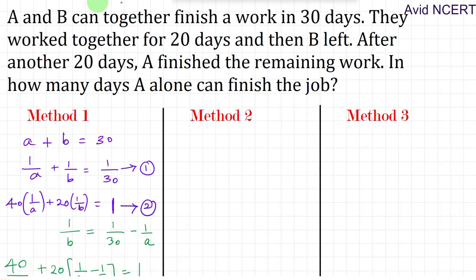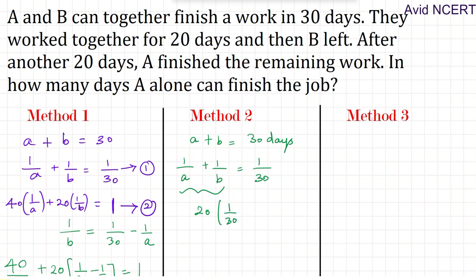The second method: A and B can together finish the work in 30 days, so their combined 1 day's work is 1/30. A and B together finish 20 days of work, which is 20 times (1/30). The zeros cancel, which equals 2/3. That means 2/3 of the work is completed.